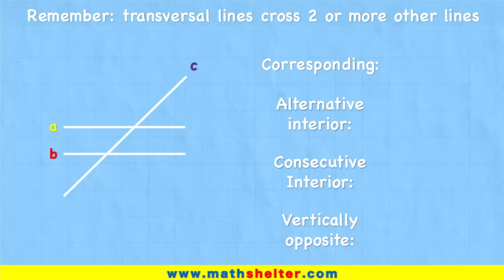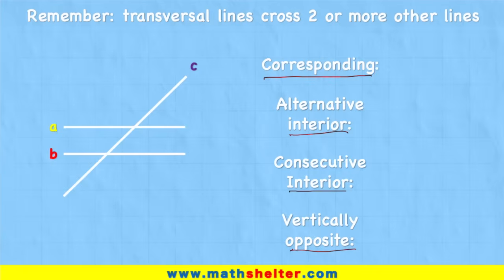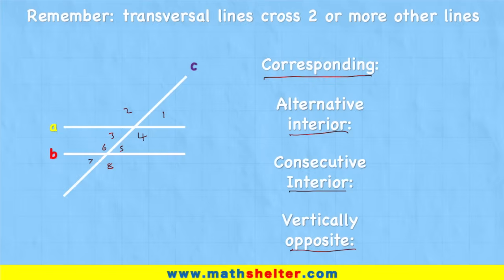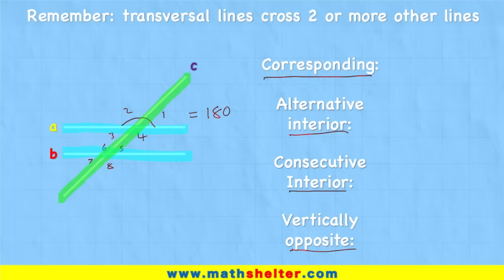Now what we're going to learn is the different angles that form around there and the relationships between them. We actually have four different relationships and four different types of angles here. We have corresponding, we have the alternative interior, the consecutive interior, and the vertically opposite. When we have a transversal line cutting through a set of parallel lines, we create eight angles. We can see angle one, two, three, four, and then five, six, seven, and eight. To understand this, we've got to think about all the knowledge we know about angles on straight lines and angles around a point. The angles on a straight line equal 180. And because these lines are parallel, the transversal line that cuts through them is going to be creating the same angles on both lines.